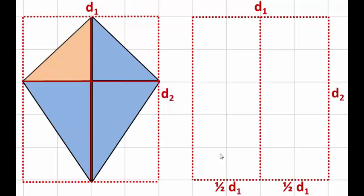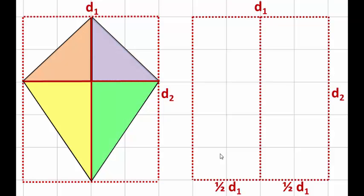We're going to orange, one there, yellow, green and purple. So let's start moving our four color-coded triangles into this space of half our rectangle.